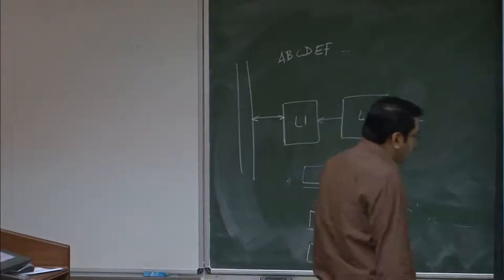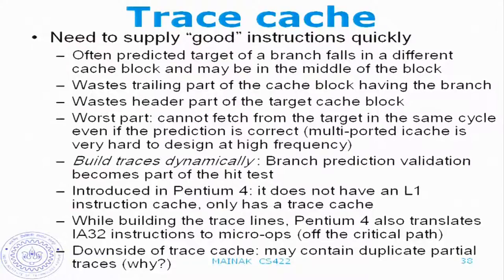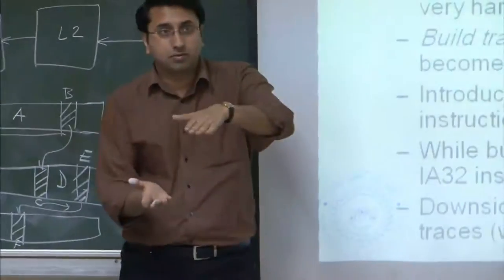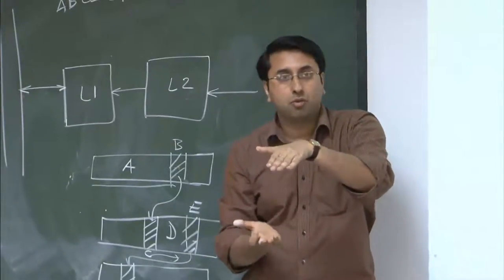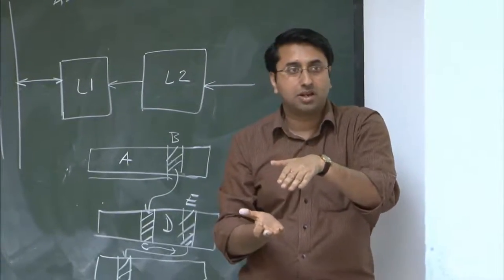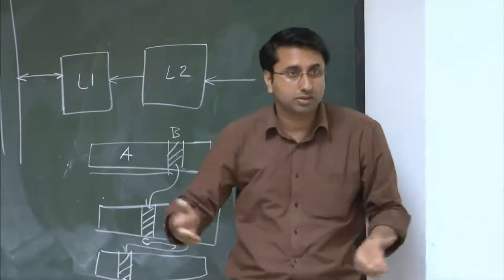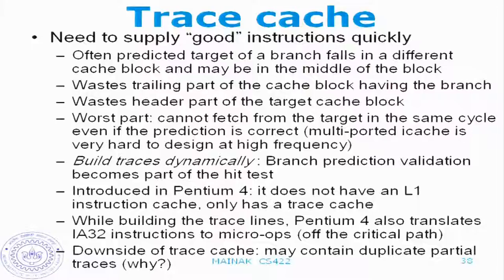One major problem of trace cache is that it may contain duplicate partial traces. The same piece of code may be part of two different paths — you can execute through one path or another, and both traces may share a common portion, but they appear as two different portions of the trace cache. This is really very hard to avoid — it's extremely hard to avoid duplicate partial traces.